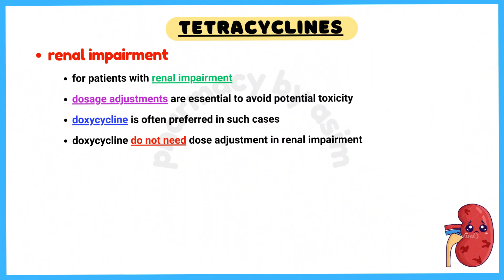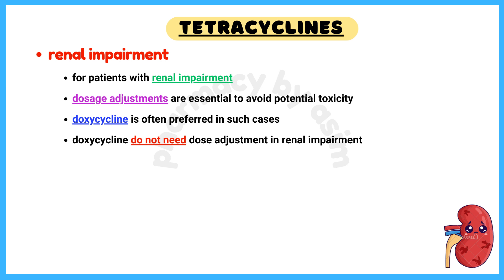Alternative dosing for renal impairment. For patients with renal impairment, dosage adjustments are essential to avoid potential toxicity. Doxycycline is often preferred in such cases due to its minimal renal excretion.